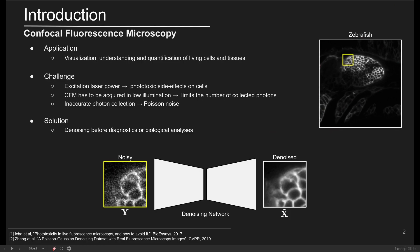However, the excitation laser power used in CFM imaging introduces considerable side effects on the cells. To address this, CFM images need to be acquired in a low illumination environment, but acquisition in low illumination affects the number of collected photons and this leads to Poisson noise contamination in the resultant images.